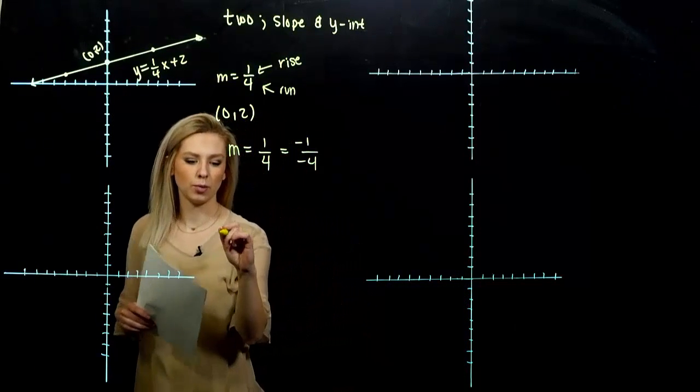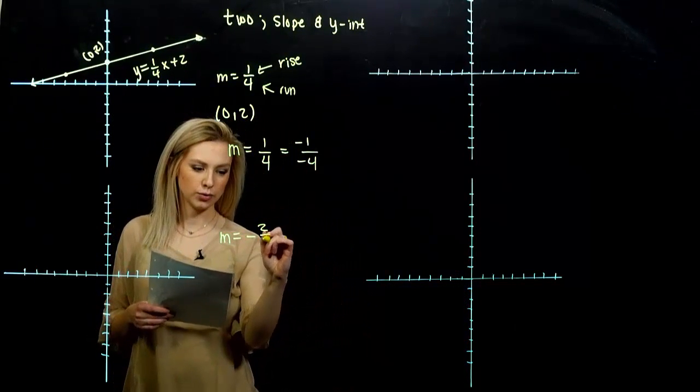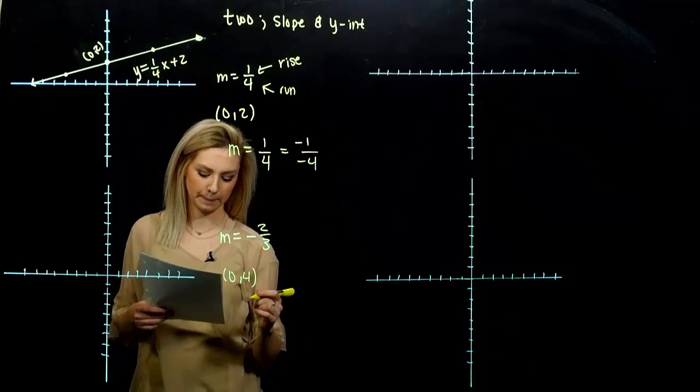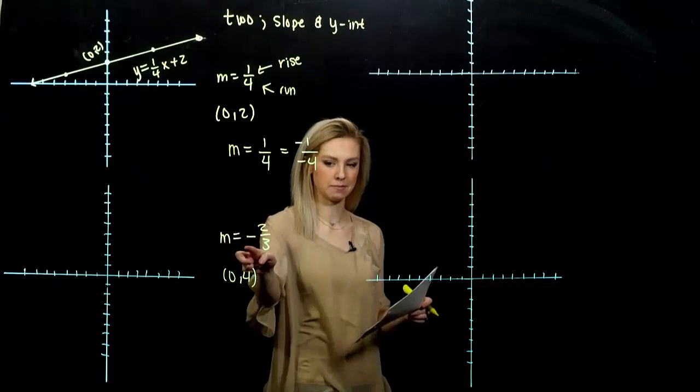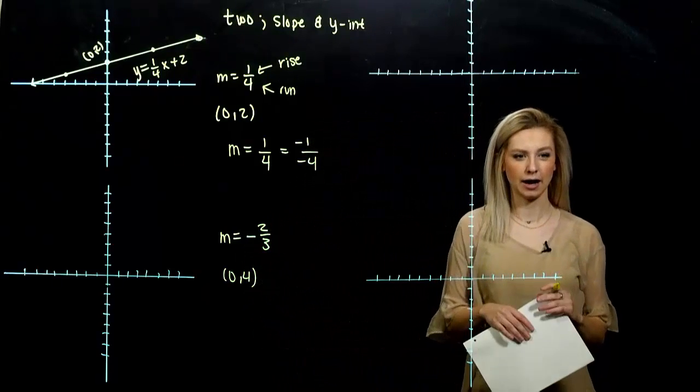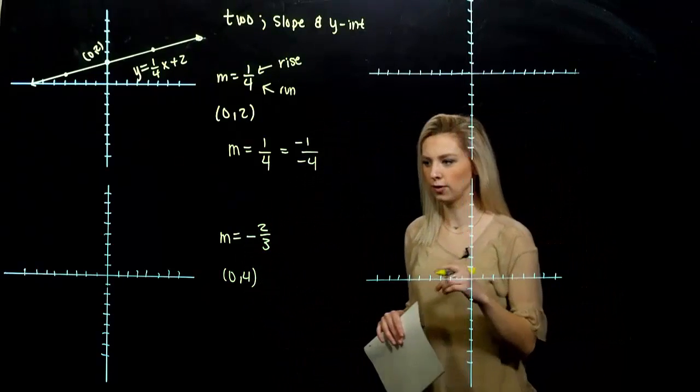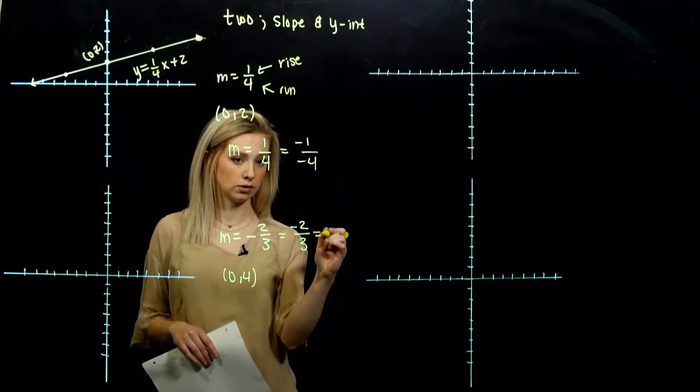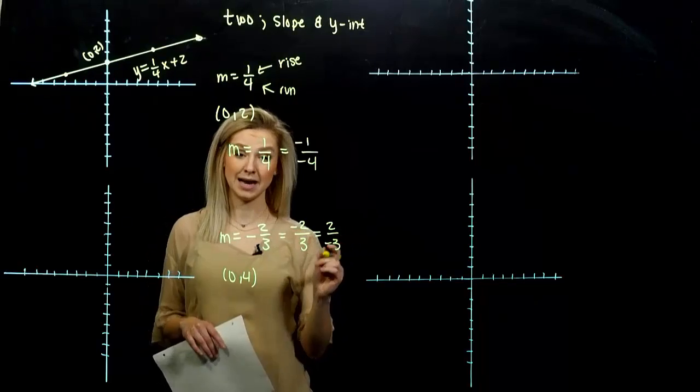Now let's look at the second one. Now I have slope minus two-thirds, y-intercept zero, four. So what are my different options for that negative on the slope? If I have one out in the front, where can I give it? I can either give it to the top or give it to the bottom, but not both.